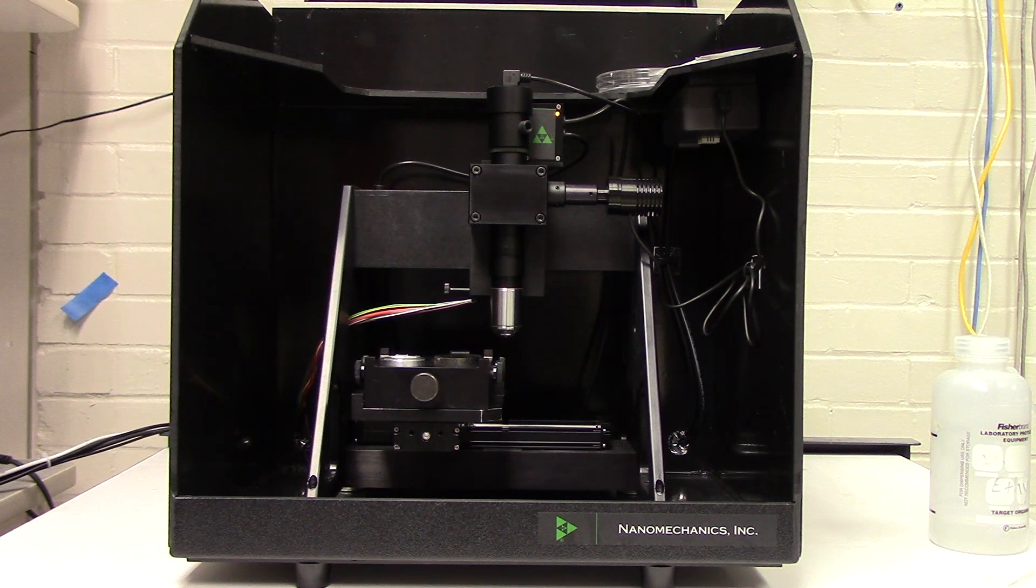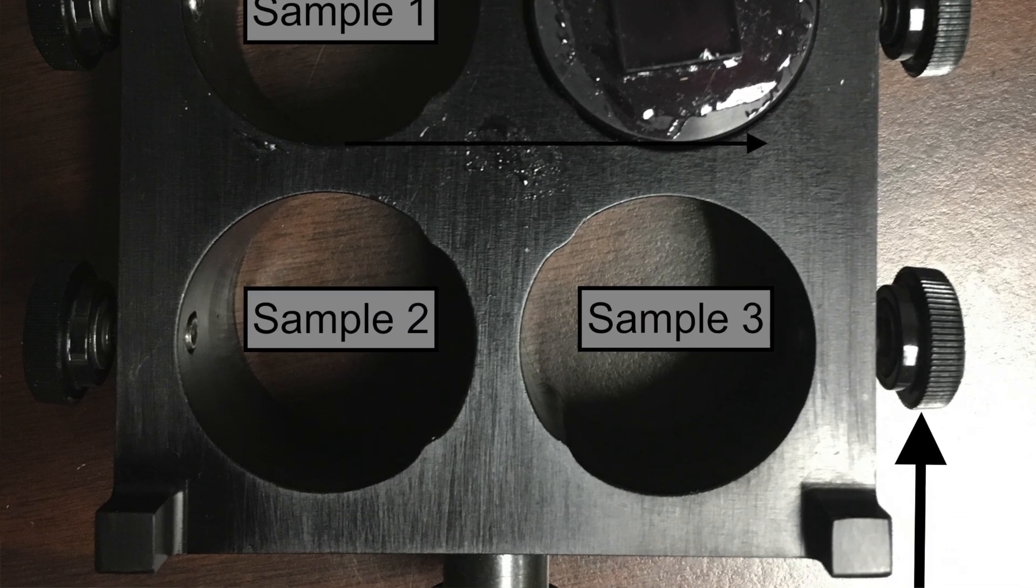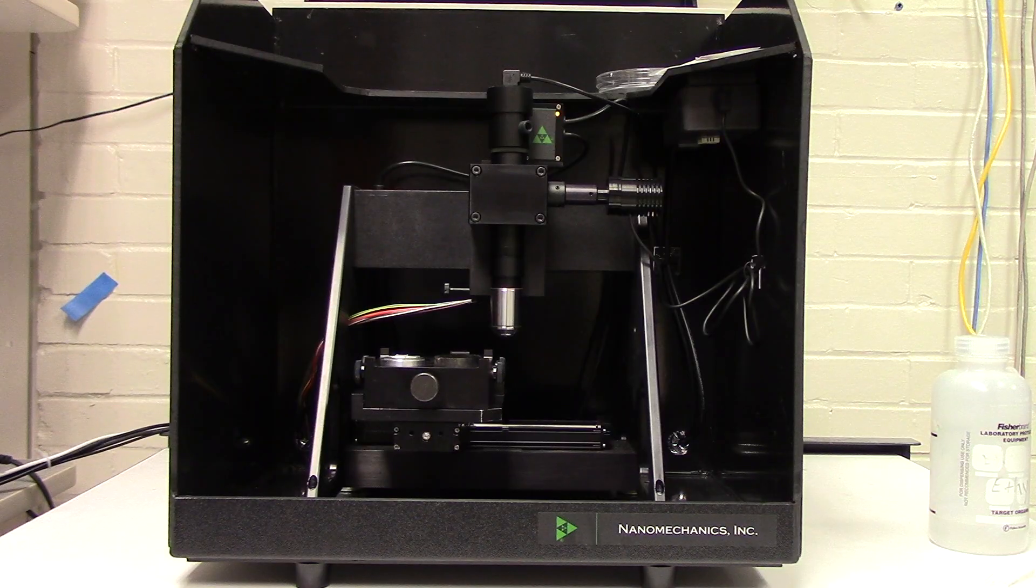The sample tray is magnetic, allowing for easy retrieval and placement. You can place up to four different mounts into here, with fused silica always occupying one of the slots for data verification and tip calibration.